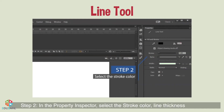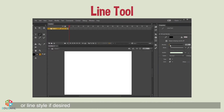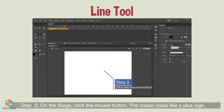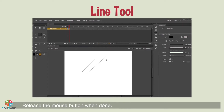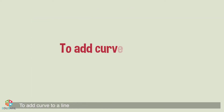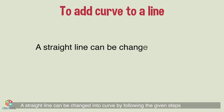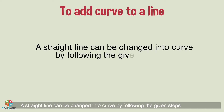Step 2: in the Property Inspector, select the stroke color, line thickness, or line style if desired. Step 3: on the stage, click the mouse button — the cursor looks like a plus sign — then click and drag it in the direction where you want to draw a line. Step 4: use the Shift key to draw a straight line. Release the mouse button when done. To add a curve to a line, a straight line can be changed into a curve by following the given steps.